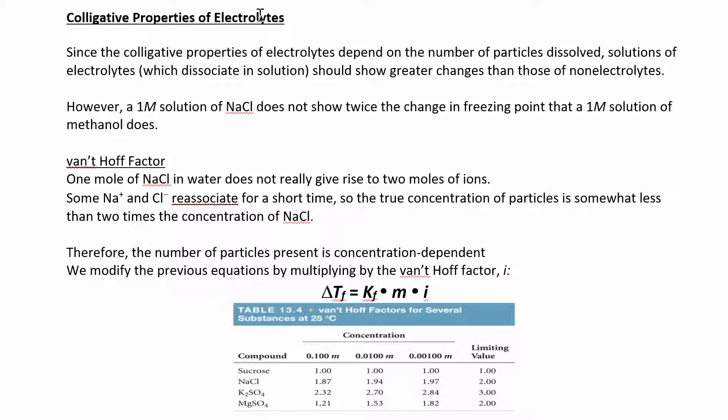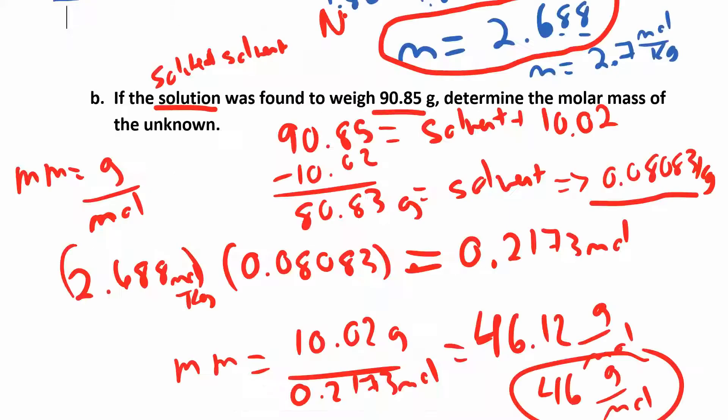Colligative properties depend on the number of particles that you have. So if you have something that dissociates into ions, something like sodium chloride. So think about sodium chloride.